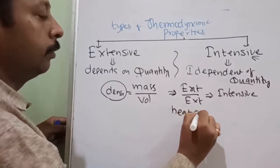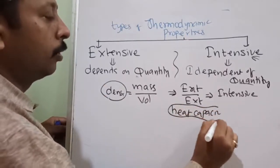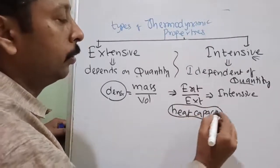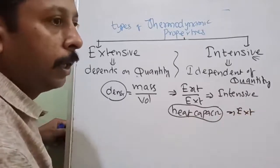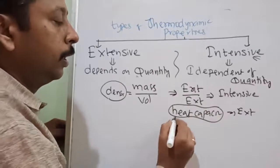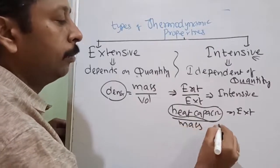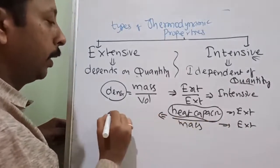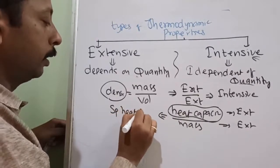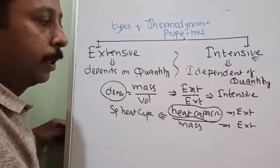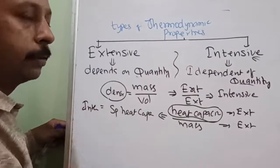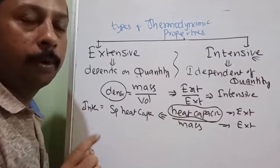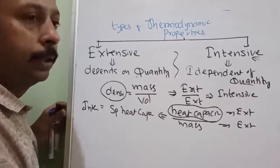Suppose heat capacity — the amount of heat required to increase the temperature by one degree Celsius — this is extensive. I am dividing it by mass, which is also extensive. Whatever I get is called specific heat capacity. But it is going to be intensive. The ratio of two extensive properties will be intensive. Intensive properties are not additive; extensive properties are additive. E plus I is not okay; I plus I is not okay. But you can divide both of them — no problem.